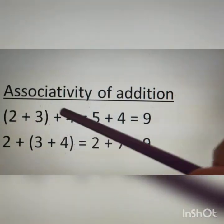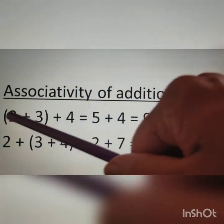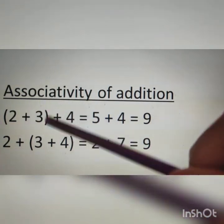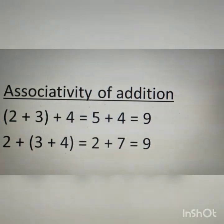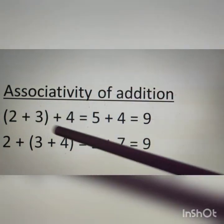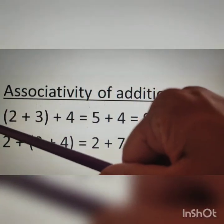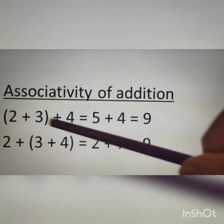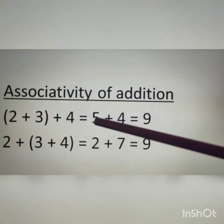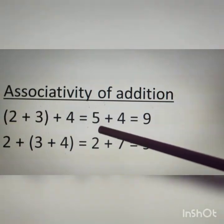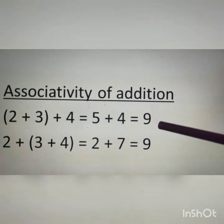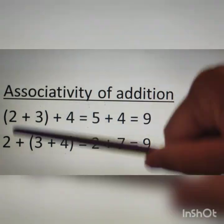According to the BODMAS rule, the number in the bracket will be calculated first. Therefore 2 plus 3 is equal to 5, then 5 plus 4 is equal to 9.